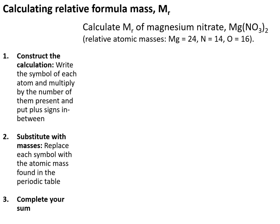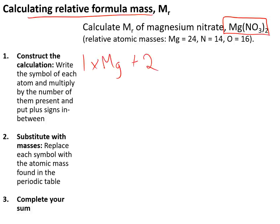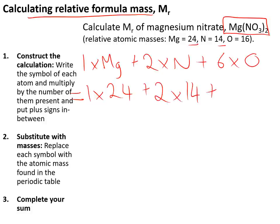Topic 9: mass calculation. The relative formula mass of a compound is calculated by adding together the masses of all the atoms in it. For magnesium nitrate, it contains 1 magnesium, 2 nitrogen, and 6 oxygen atoms. Using atomic masses — magnesium is 24, nitrogen is 14, and oxygen is 16 — we get (1×24) + (2×14) + (6×16), giving a relative formula mass of 148.